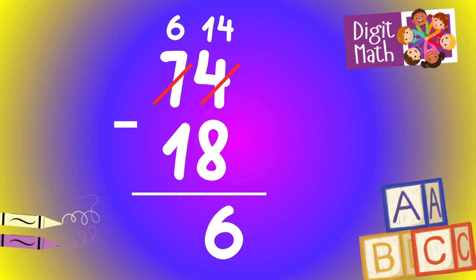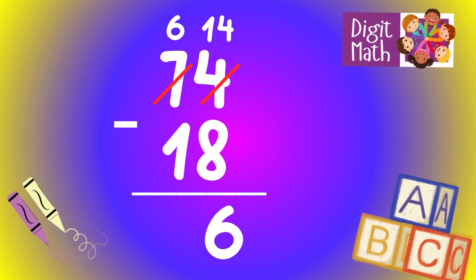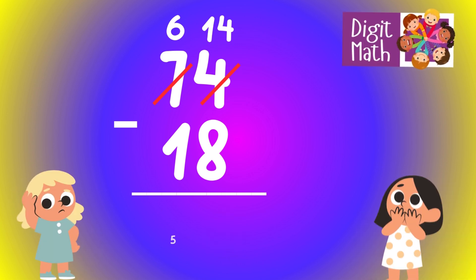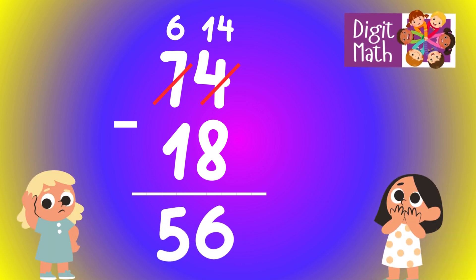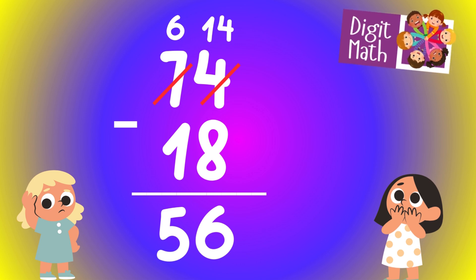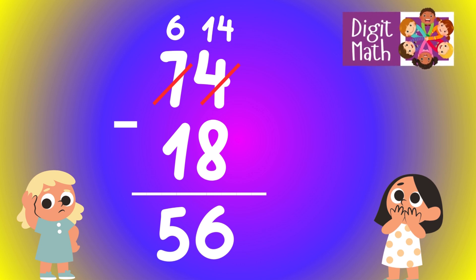In the tens column, we now have 6. Subtract 1 from 6, which equals 5. So the final result is 74 minus 18 equals 56.